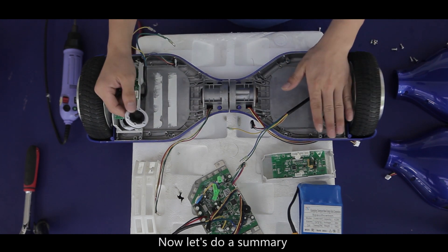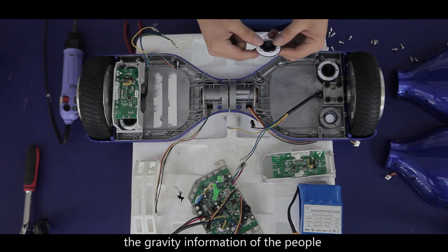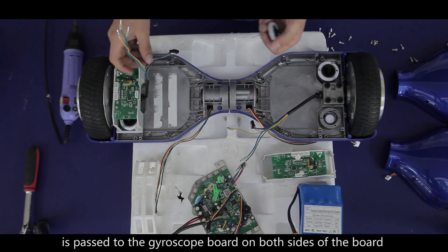Now let's do a summary. Through the gyroscope on both sides of the machine, the gravity information of the people is passed to the gyroscope board on both sides.